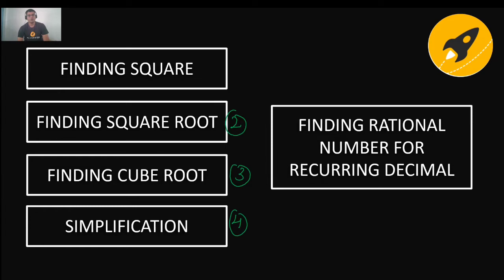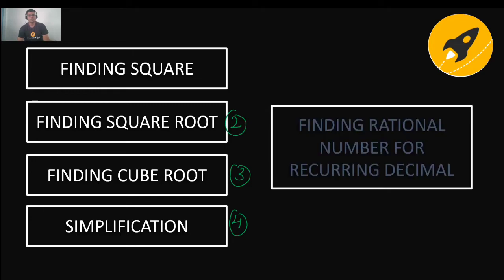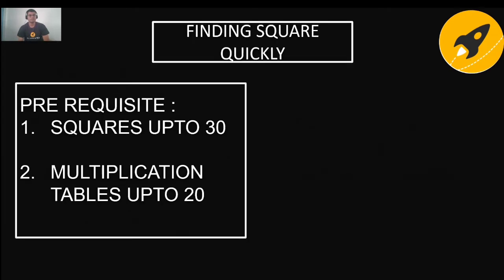The first topic is finding a square quickly — how to find the square of a number quickly. The prerequisite for this trick is that you have to remember the squares up to 30 and the multiplication tables up to 20. For example, if I ask you what is the square of 12, you must tell me immediately: it is 144.